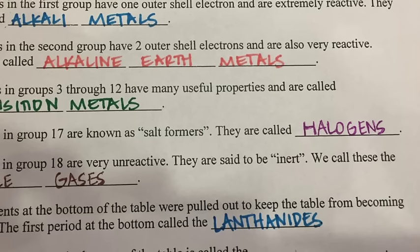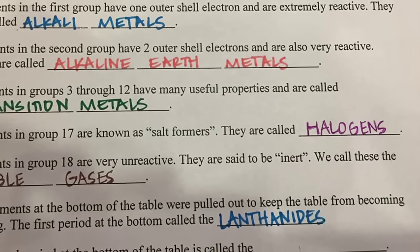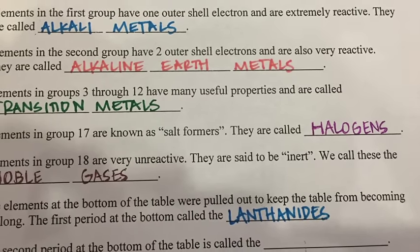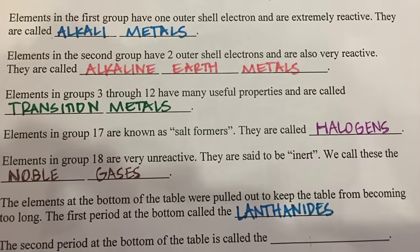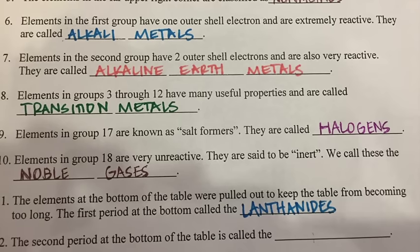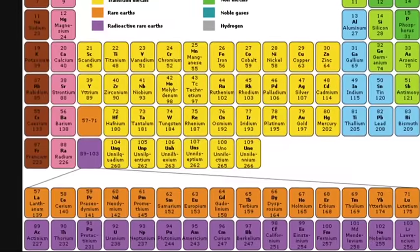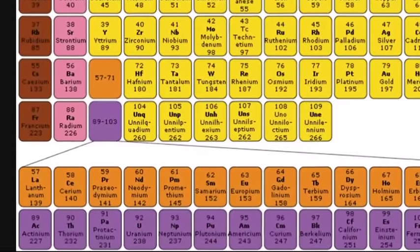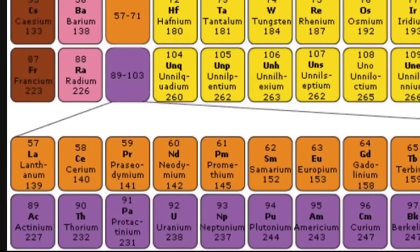The elements at the bottom of the periodic table were pulled out to keep the table from becoming too long. If both rows at the bottom were included where they actually fit, the periodic table would be very difficult to fit on a piece of paper. The first row at the bottom is called the lanthanides, because it starts with lanthanum, which is number 57, and it would actually go right next to barium in the periodic table. The lanthanides are shiny and reactive.